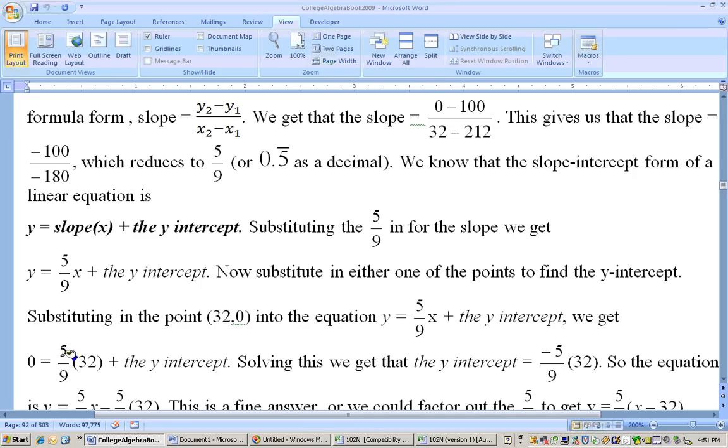So, taking this five ninths times 32 to the other side, that's going to change its sign, and I get the y-intercept is equal to negative five ninths times 32.